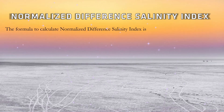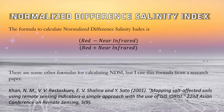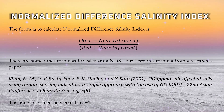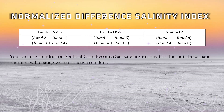The formula to calculate the Normalized Difference Salinity Index is: red minus near-infrared divided by red plus near-infrared. There are some other formulas for calculating NDSI, but this formula is cited from a research paper. This index is valued between minus 1 to plus 1. You can use Landsat, Sentinel-2, or Resourcesat satellite images, but the band numbers will change with the respective satellites.